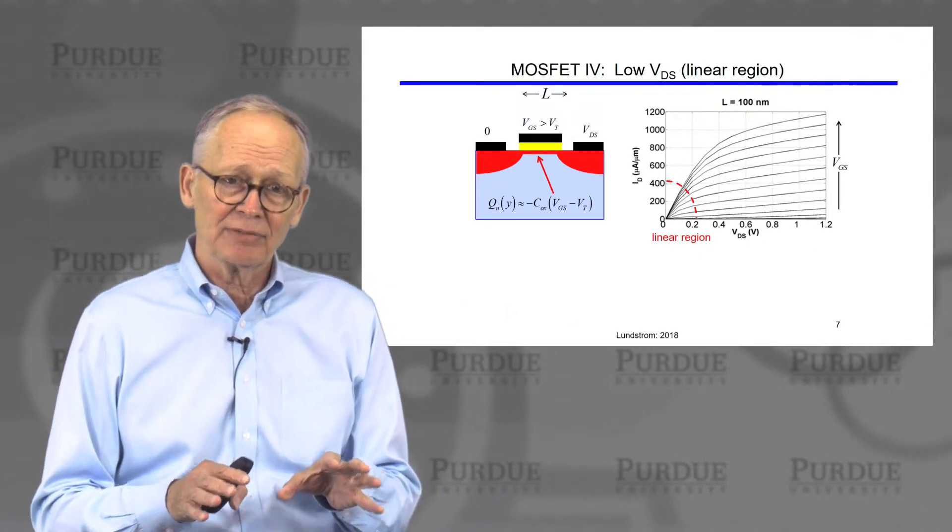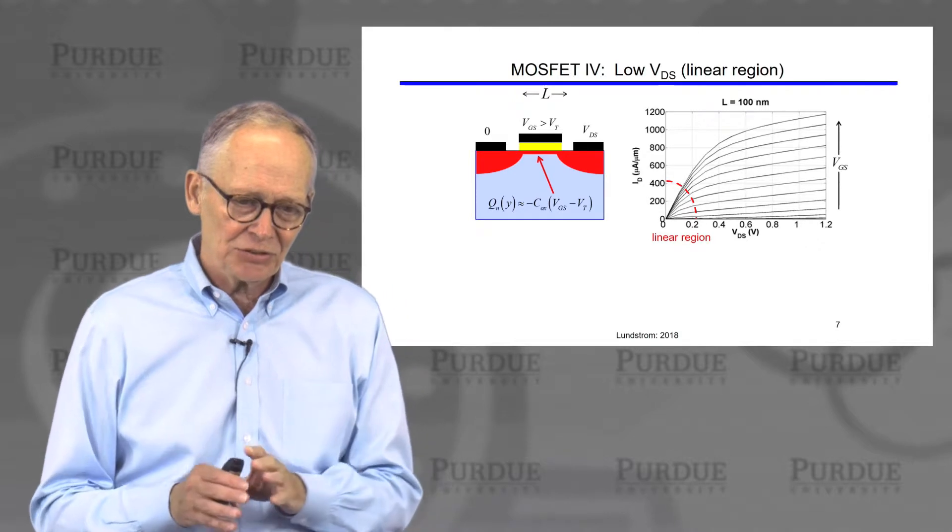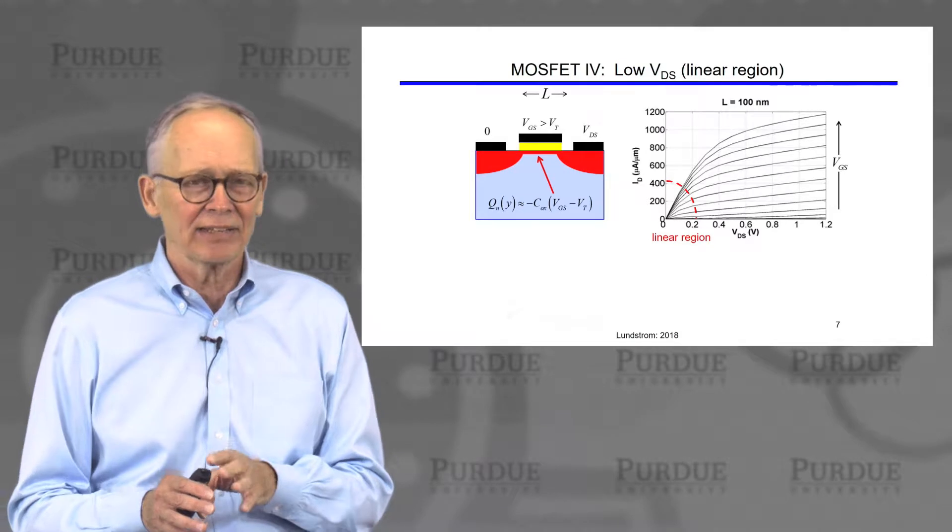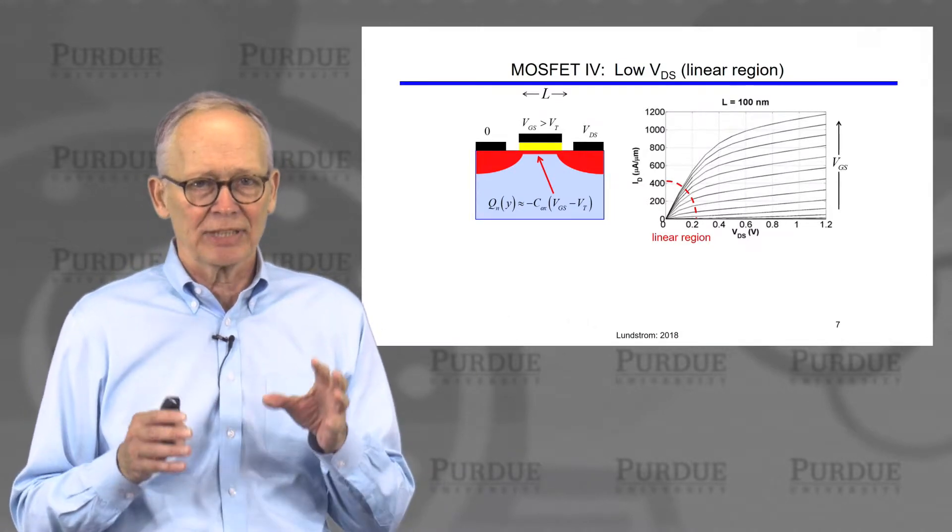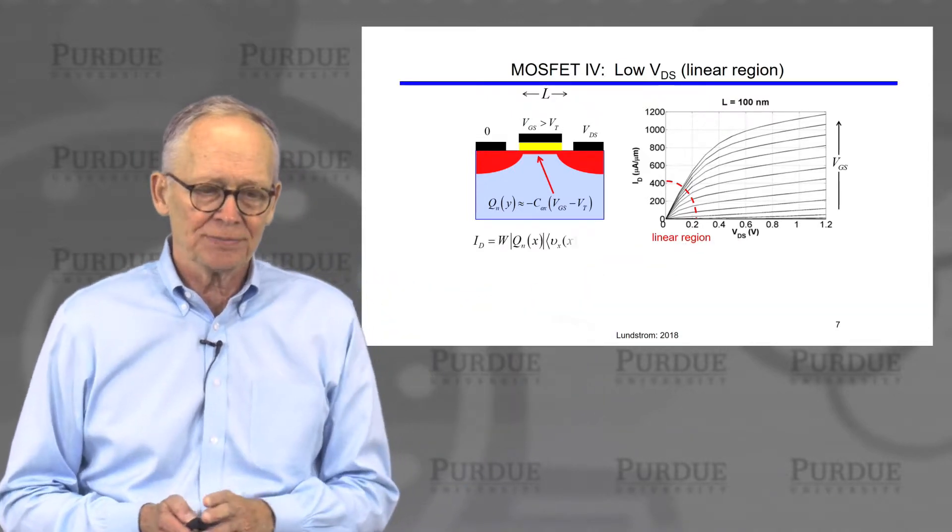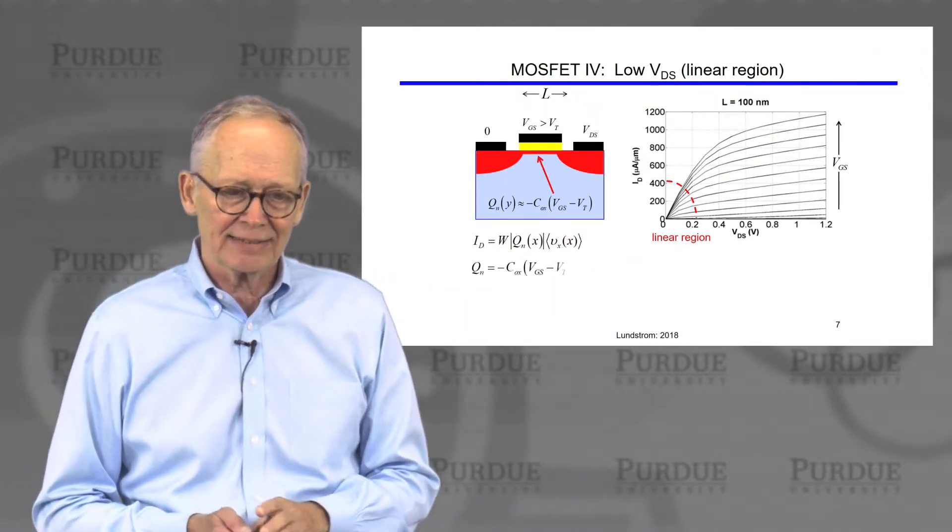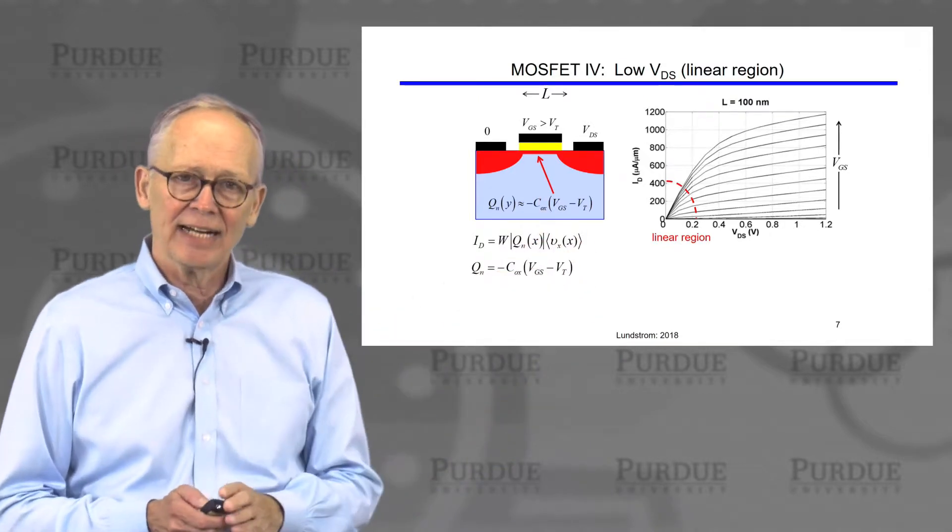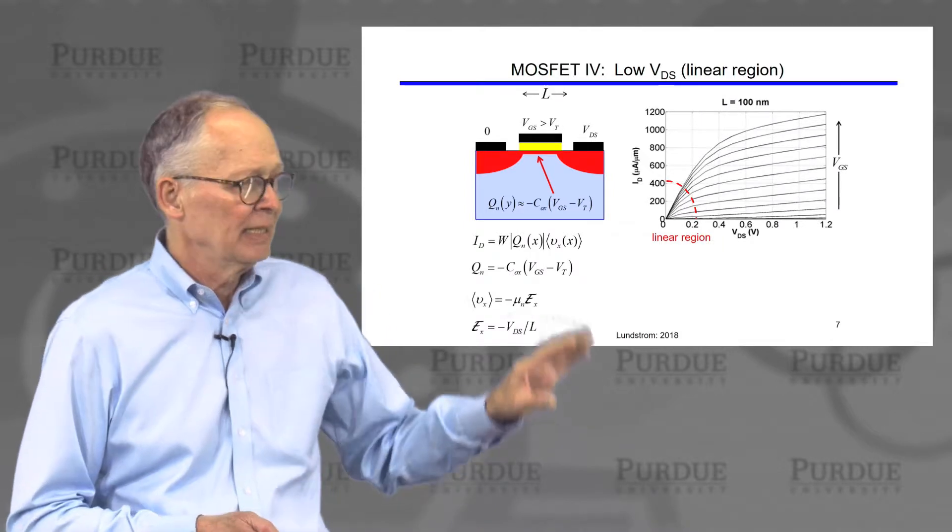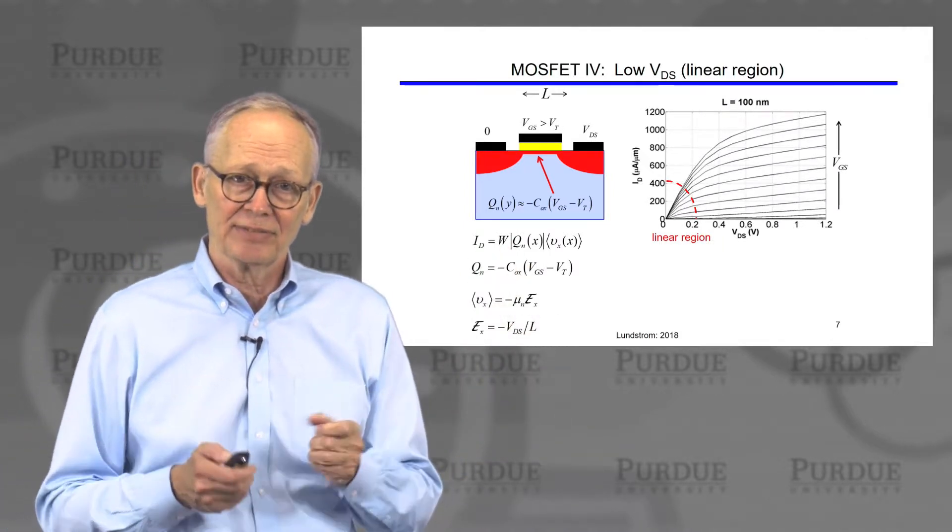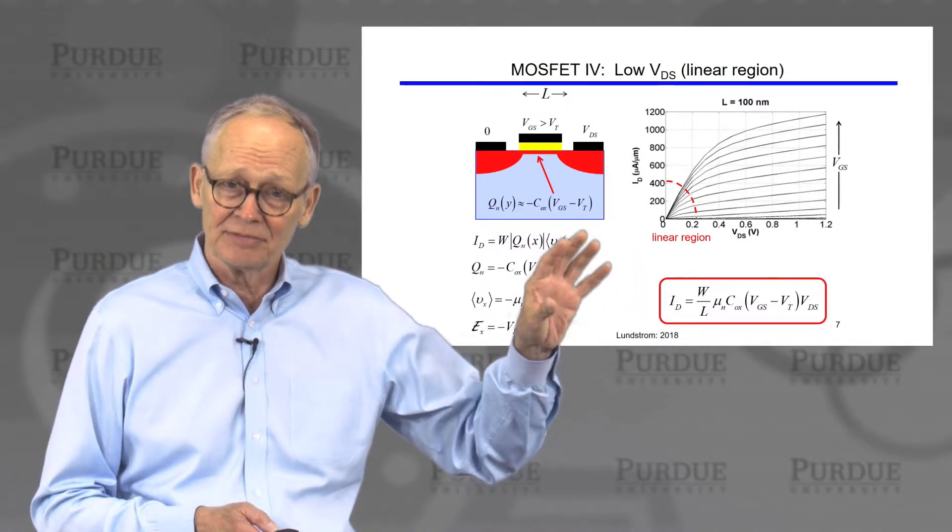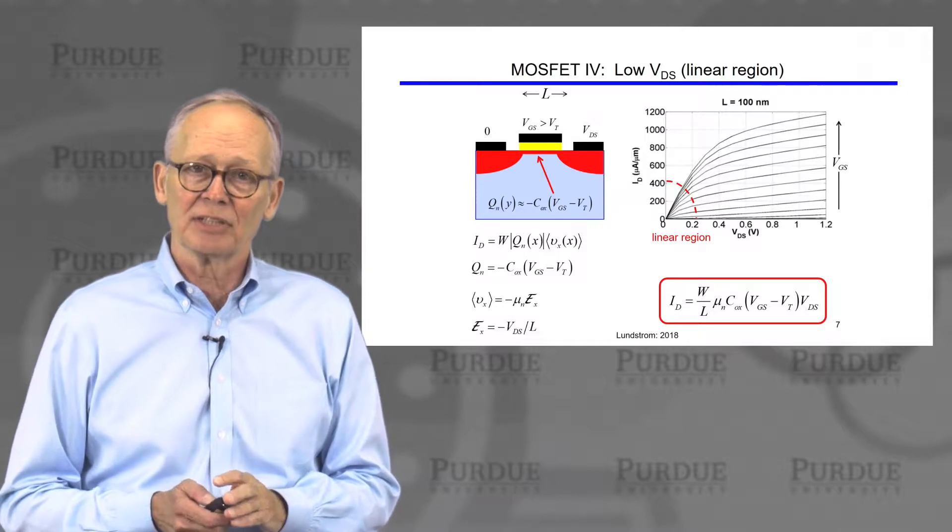Then we turned to deriving a few equations. The physical picture is more easily conveyed by the energy band diagrams, but we want some simple physical equations that tell us the magnitude of the current. We did the linear regime first, and we wrote the current as charge times velocity. We wrote the charge as Cox(Vg - Vt). We wrote the velocity as mobility times electric field. We said the electric field is just the voltage across the channel divided by the channel length. We put it all together and we got a very simple but very good description of the linear regime current.